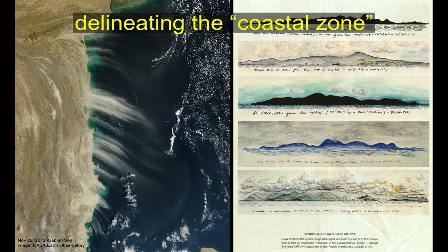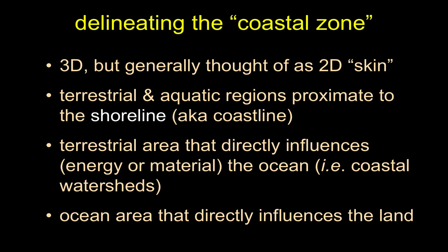It's important to keep in mind that the coast is a three-dimensional structure, though in practice we typically think about it as a two-dimensional thing — a skin on a map. The first potential definition is the terrestrial and aquatic regions close to the shoreline or coastline. All the terrestrial stuff and all the water stuff near the shore.